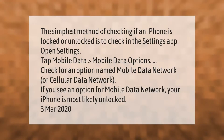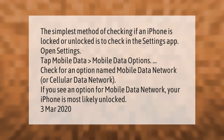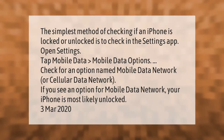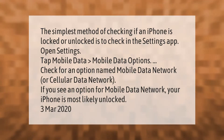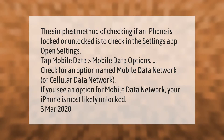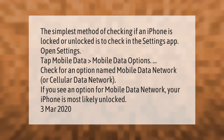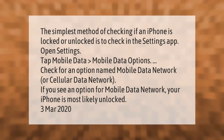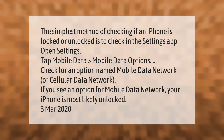The simplest method of checking if an iPhone is locked or unlocked is to check in the Settings app. Open Settings, tap Mobile Data, then Mobile Data Options. Check for an option named 'Mobile Data Network' or 'Cellular Data Network.' If you see that option, your iPhone is most likely unlocked.